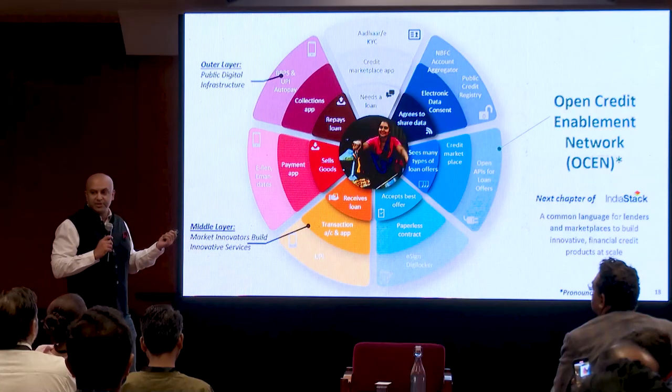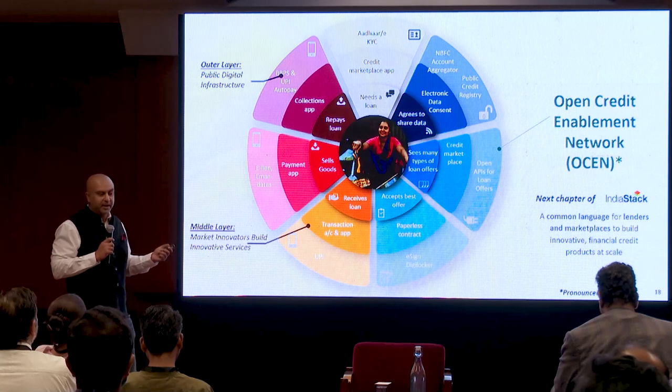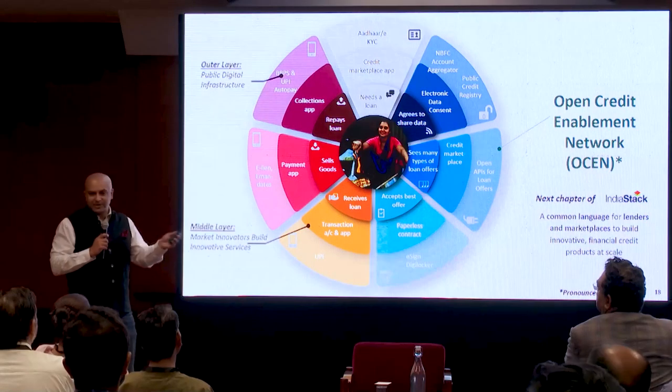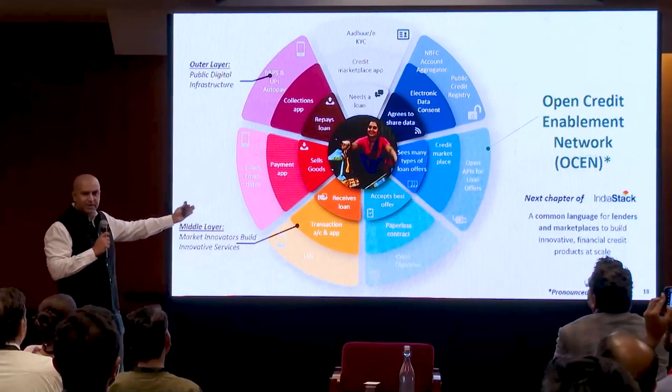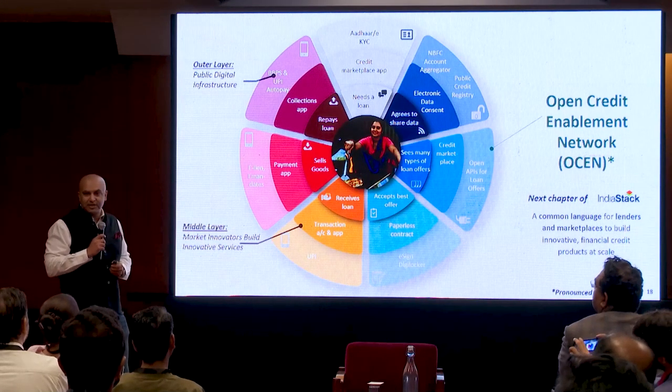Rajni is a vegetable vendor in a small village in India. She has access to a smartphone and the internet, but she doesn't get credit. Can we get her a 500-rupee loan at 9 in the morning, pay it back by 5 in the evening? She goes and buys vegetables, sells them in some market, pays the loan back, and keeps the difference. The challenge is: if the minimum ticket size has to be 3 to 5 lakhs, how do we make 500 rupees possible? The inner circle is what Rajni does; the middle circle is what the private sector does; the outer circle is what we build as public infrastructure — account aggregator, UPI, eSign, DigiLocker — the Lego blocks the private sector builds on.